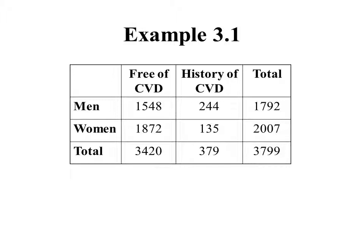To illustrate this idea, let's look at the data from example 3.1 in the book, which gives us results of cardiovascular disease and gender. We surveyed a total of 3,799 people: 3,400 were free of cardiovascular disease, and 379 had a history of cardiovascular disease. 1,700 were men and 2,000 were women. 1,500 men were free of cardiovascular disease, 244 men had a history, 1,800 women were free, and 135 women had a history.